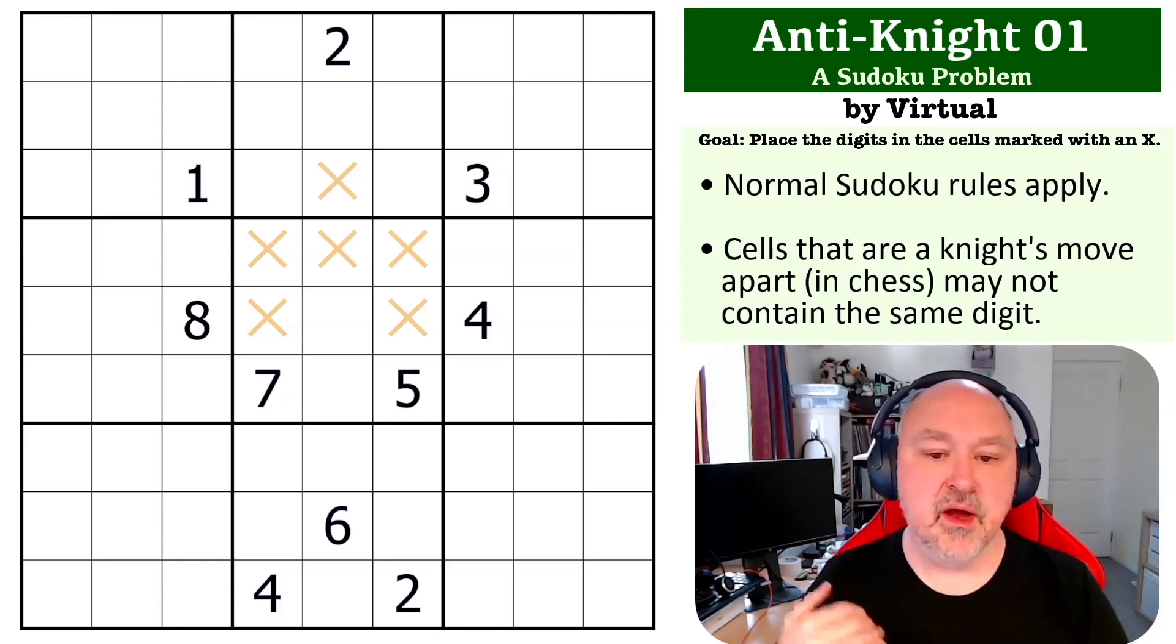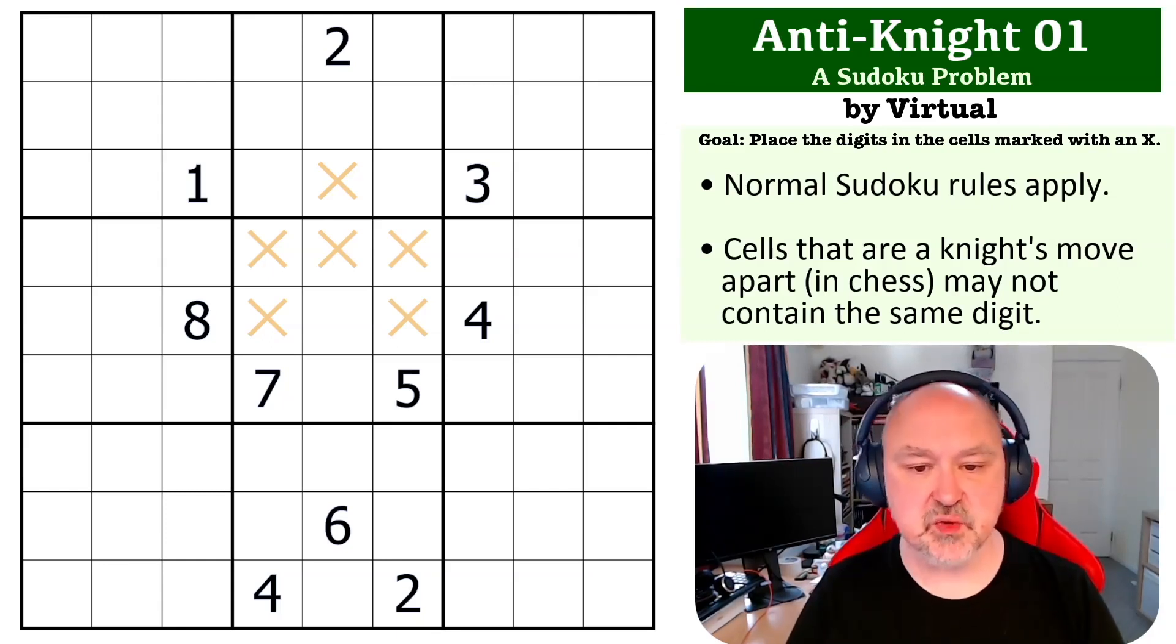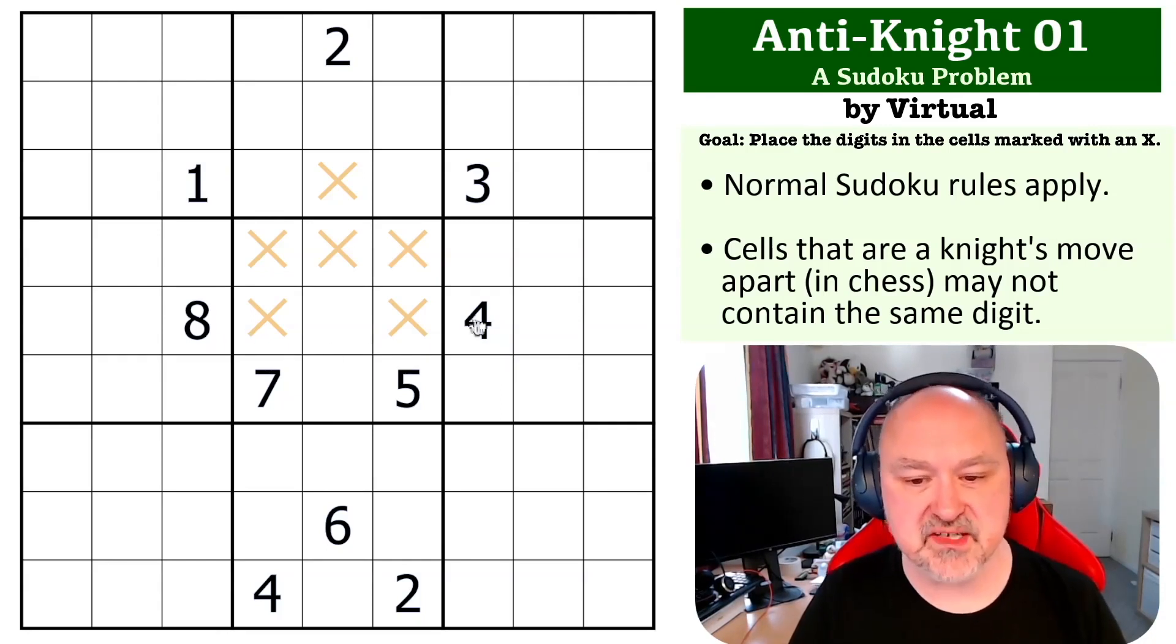Okay, so the trick to this one is basically understanding how that extra sort of knight's move puts pressure on the grid, particularly by starting off by looking at this four and this eight.